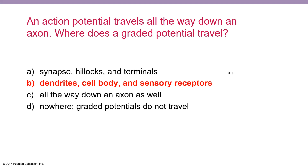In other words, that proximal receptive part of the neuron — the soma, the cell body, the dendrites that are receiving inputs and signals from other neurons. That is all the distance that we see graded potentials travel. By the time that signal, as weak as it is, gets to the axon hillock, it has completely dissipated.